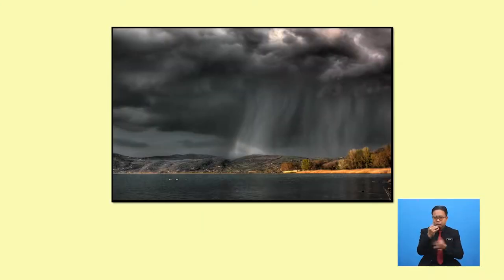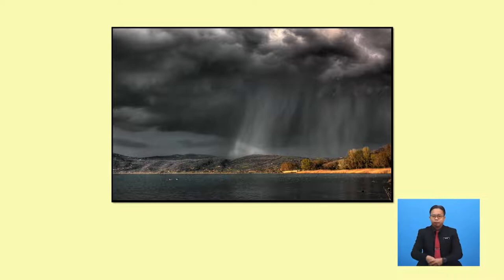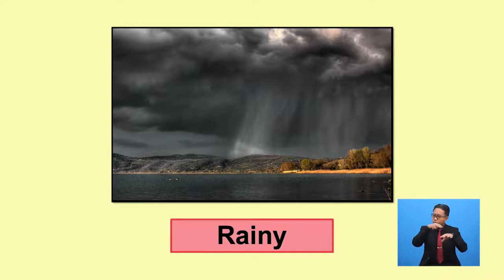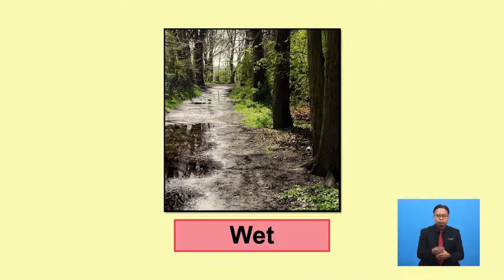What do you see now? The rain! When there are clouds and droplets fall down, we say: 'It's raining.' 'It's raining hard.' 'It's pouring down.' And we say 'wet' when it's after rain or it's raining lightly — for example, it's a little wet outside.